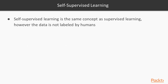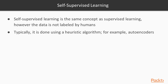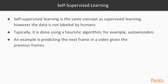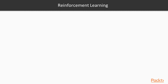Now let's look at self-supervised learning. Self-supervised learning follows a similar concept as supervised learning; however, the data isn't labeled by humans. The labels are often created using heuristic algorithms, things like autoencoders. These topics are a bit beyond the scope of this course and get quite complicated, but an example is something that can predict the next frame in a video given the previous frames. That's how we can use it in the computer vision world.